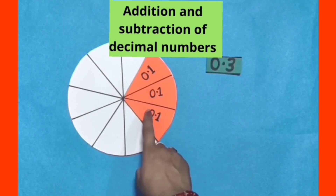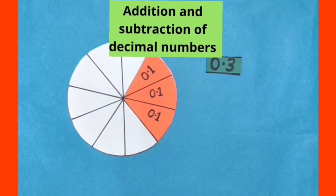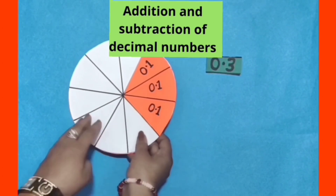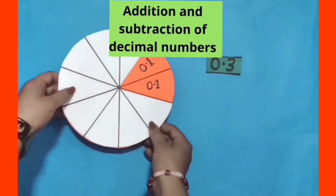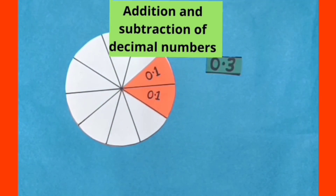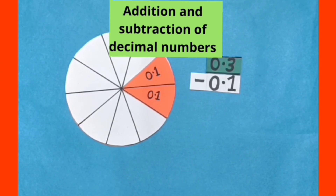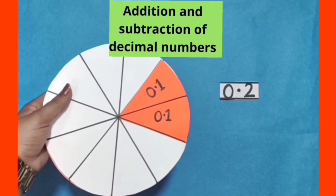Now in this figure, out of 10 equal parts, its 3 colored parts' decimal form is 0.3. When we move these 2 circles, we reduce 1 colored part of the circle and we are left with 2 colored parts of the circle.